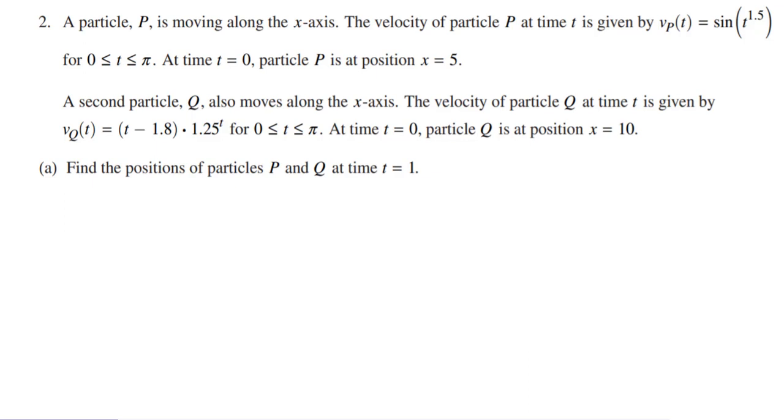We have a particle P, and this particle P is given this function of VP of t, the velocity of particle P with respect to time. It's sine times time to the 1.5 power, and we're only doing this from zero to pi. We know at time equals zero, the particle P's position is x equals five.